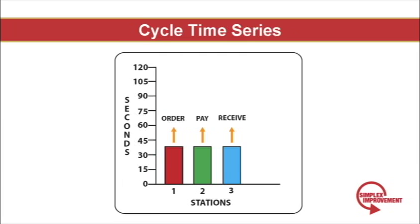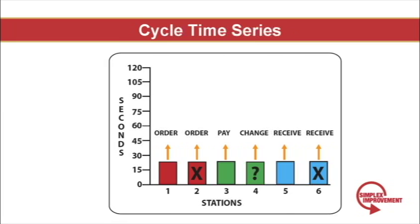It wouldn't make sense to have six workstations where the first station takes half your order and the second station takes the other half. It might work for the next two stations, one station taking your money and the other station giving your change, but it wouldn't work well to receive half your order at station number five and the other half at station number six.